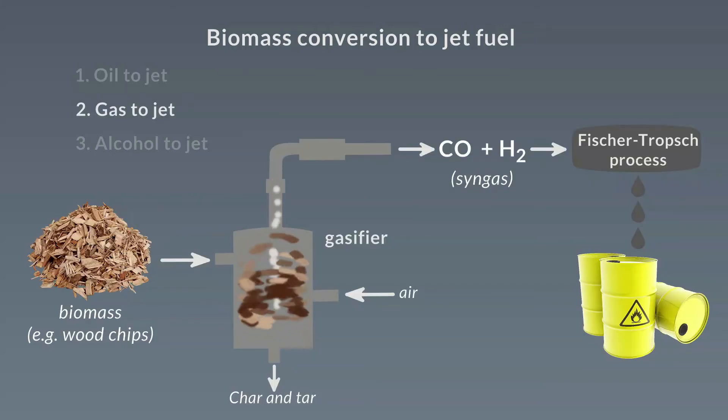The gas-to-jet approach processes biomass, for example wood chips, in a gasifier to produce syngas, which is a mixture of carbon monoxide plus hydrogen. These gases are then converted to jet fuel using the established Fischer-Tropsch process.